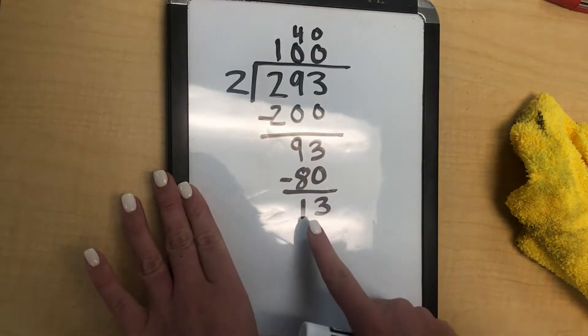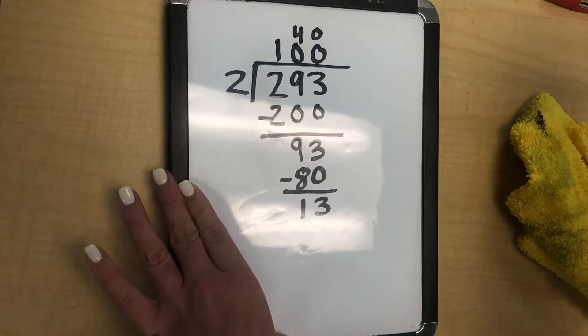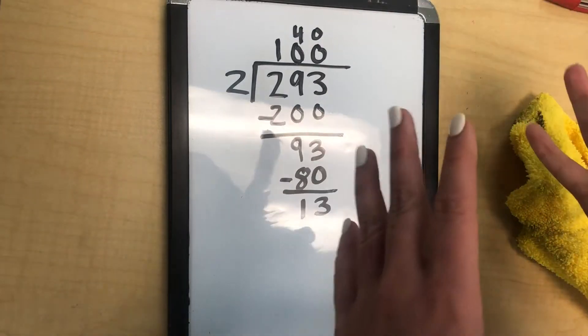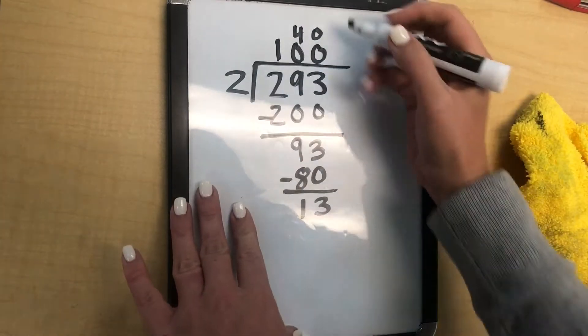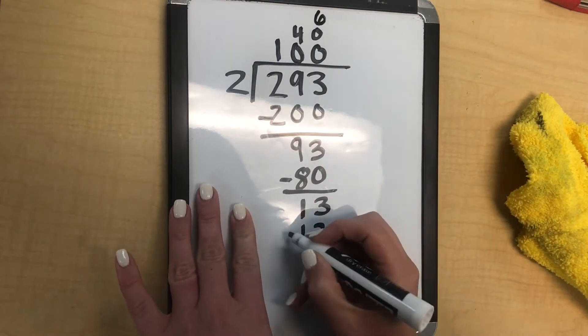What times 2 is close to 13? Well, we know 2 times 6 is 12. And 2 times 7 would be 14, so that would be too big. So we're going to do 2 times 6 equals 12. And then subtract.